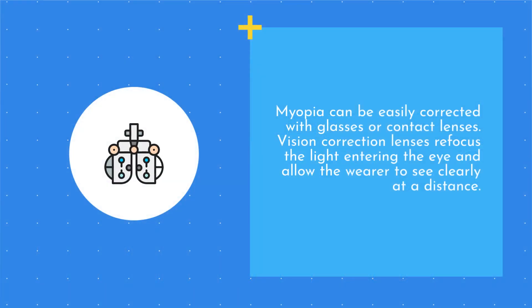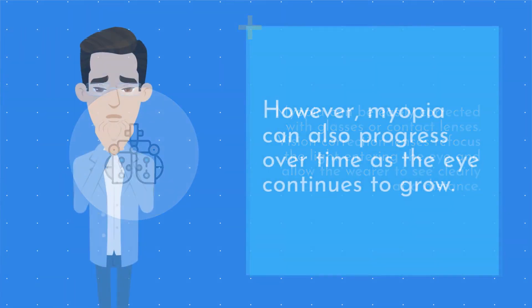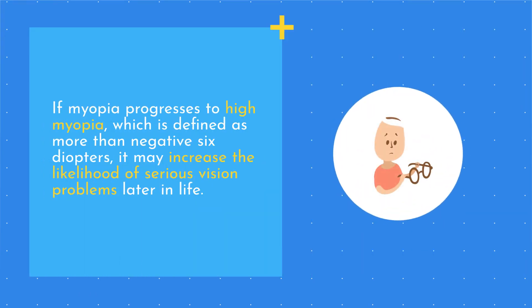Myopia can be easily corrected with glasses or contact lenses. Vision correction lenses refocus the light entering the eye and allow the wearer to see clearly at a distance. However, myopia can also progress over time as the eye continues to grow. If myopia progresses to high myopia, which is defined as more than negative six diopters, it may increase the likelihood of serious vision problems later in life.